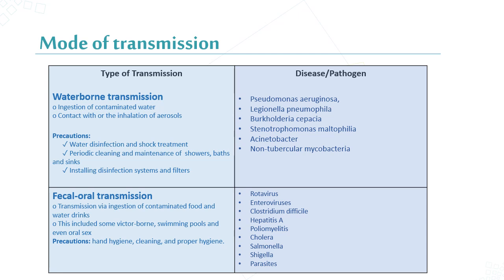Vehicle oral transmission occurs through contaminated food or water drinks, including some factor-borne sources like swimming pools. Precautions include hand hygiene, cleaning, and proper hygiene. The most important examples are cholera, rotavirus, Salmonella, and Shigella.